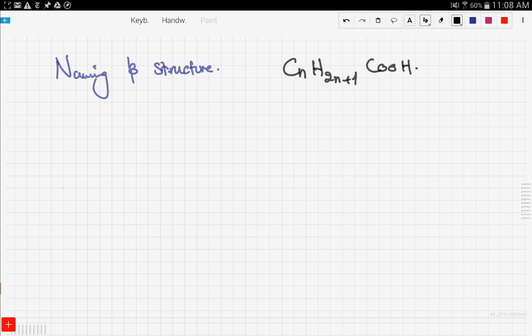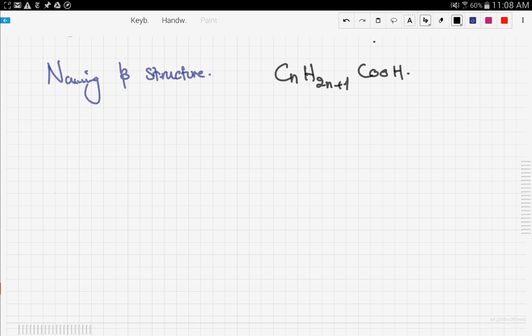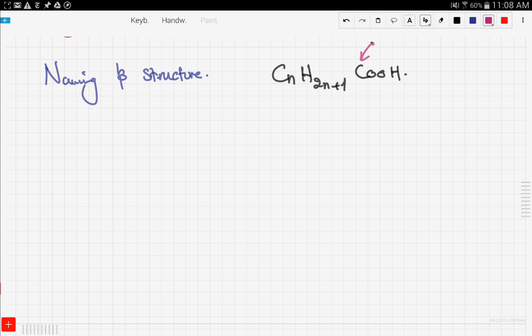You notice in the formula we have two carbons - one in the functional group and one here. One of them is constant, this is the constant C, and this is the changing C. The Cn changes with the number of n.